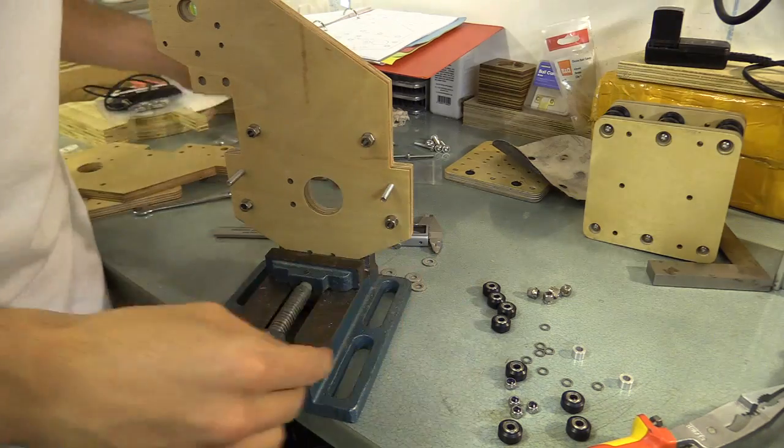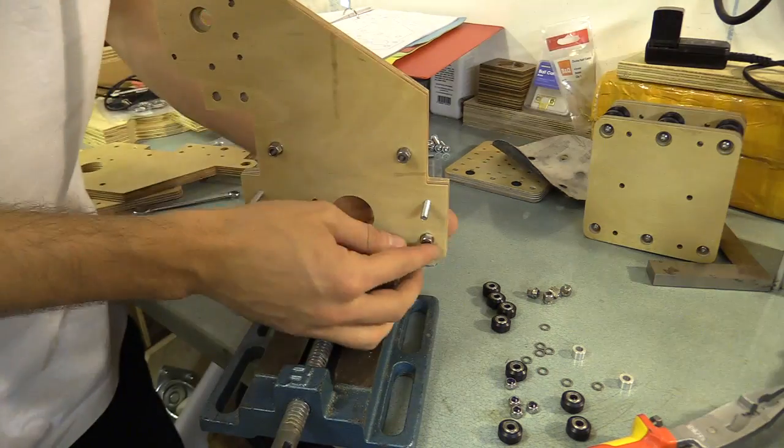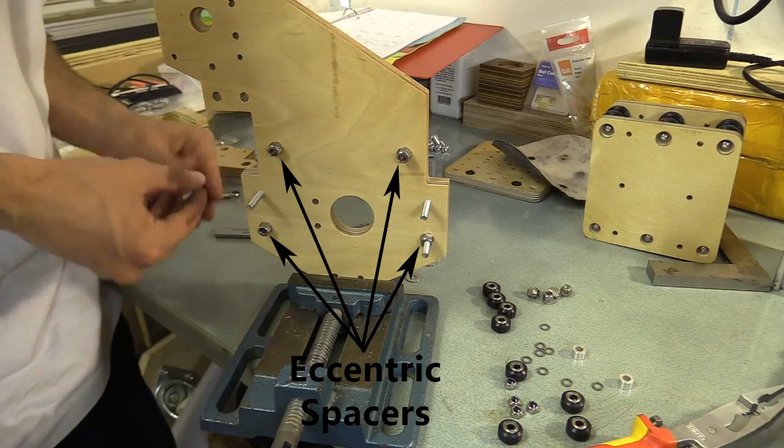I'm using four mini V wheels and two larger ones for each plate. Four of these are on eccentric spacers, and two are fixed.